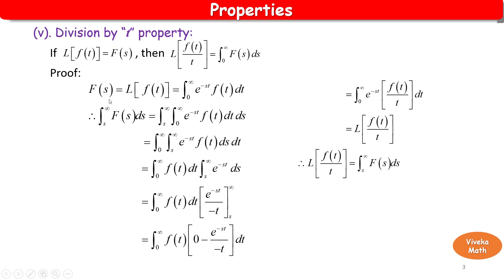Proof: using the previous multiplication by t property, we integrate both sides with respect to s from s to infinity. The right-hand side becomes the integral from s to infinity of F(s) ds.